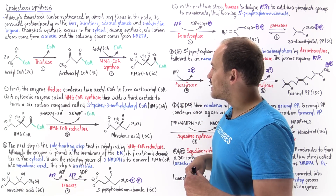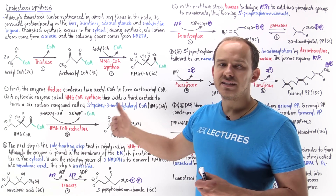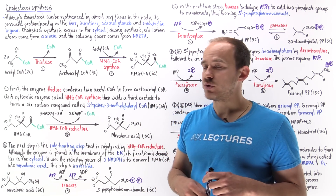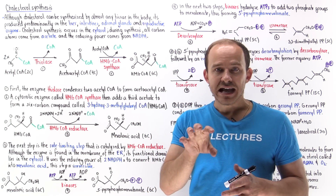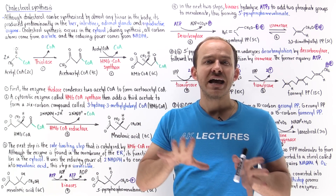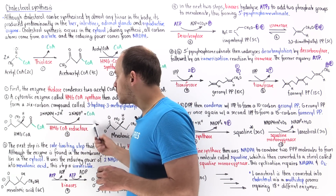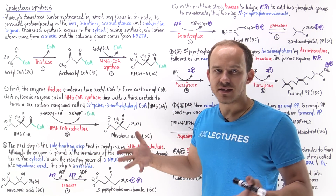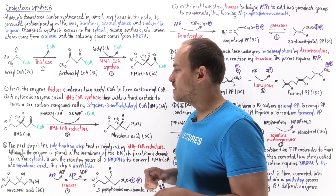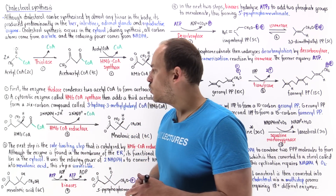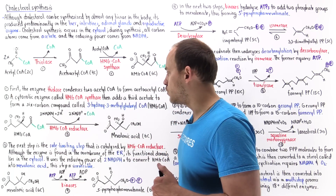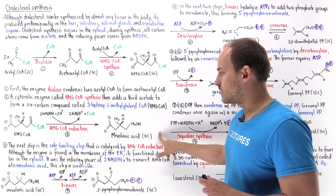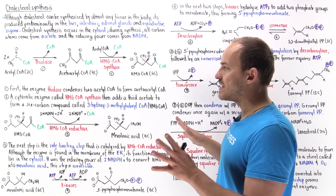Once we build this 6-carbon HMG coenzyme A, the next step is an oxidation-reduction reaction catalyzed by the rate-limiting enzyme, HMG coenzyme A reductase. This enzyme is present in the membrane of the endoplasmic reticulum, but its functional domain lies within the cytosol, so this reaction still takes place in the cytosol. This is the rate-limiting step — this is the step that is regulated by the cell.